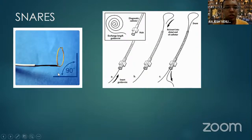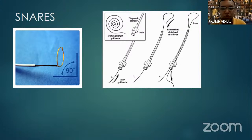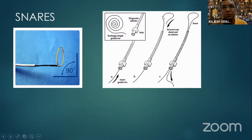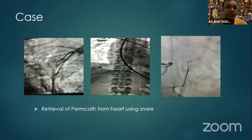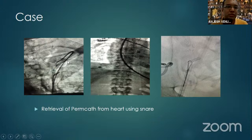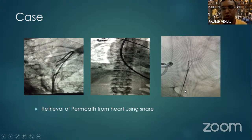Snares are commercially available but expensive. A makeshift snare can be fashioned from a 0.035-compatible straight catheter with a 0.014 wire passed through, looped, and brought back out. Pushing the wire out enlarges the loop; pulling it tightens. This image shows a case of intravascular foreign body retrieval: a dialysis catheter had migrated into the right ventricle. Using the snare loop from the catheter, we successfully grabbed and removed the foreign body from the right atrium by withdrawing it into the sheath.